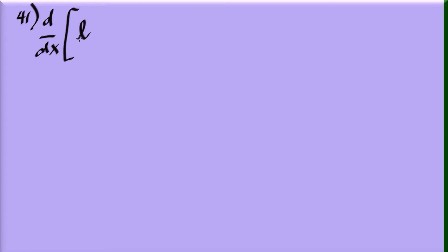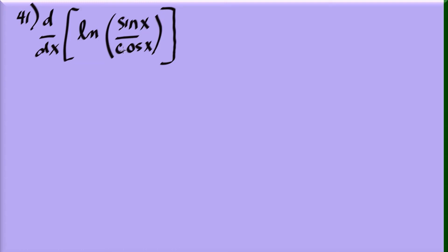Problem 41: a different shape — differentiate natural log of sine x over cosine x. This argument is a quotient, but check for ways to rename it first. Using the trig identity, sine over cosine equals tangent x. So this becomes natural log of tangent x.